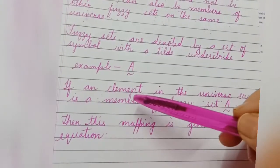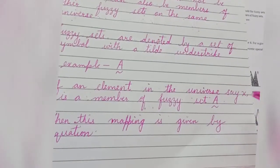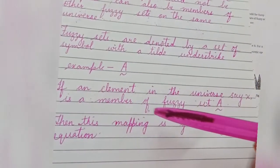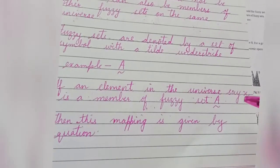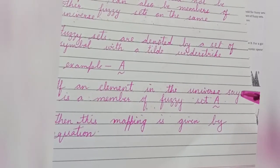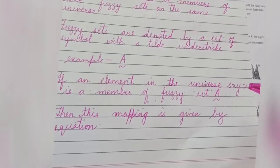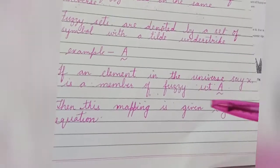If an element in the universe, say X, is a member of fuzzy set A, so this is fuzzy set A and X is an element in the universe and X is a member of fuzzy set A.